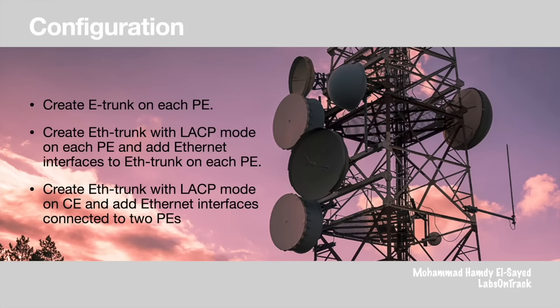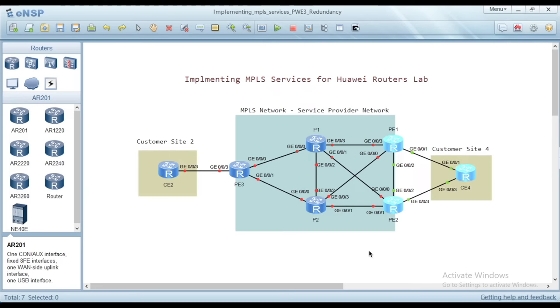These are the configuration steps for the lab. One: create E-Trunk on each PE. Two: create Ethernet trunk with LACP mode on each PE and add Ethernet interfaces to the Ethernet trunk. Three: create Ethernet trunk with LACP mode on the CE side and add Ethernet interfaces connected to the two PEs. Let's start with the lab configuration now.